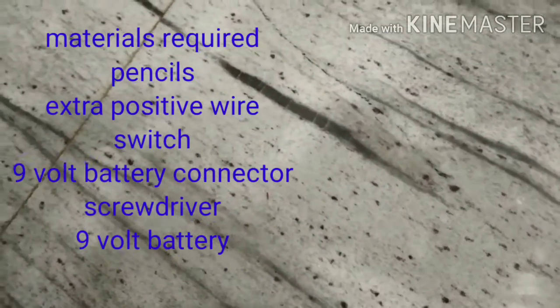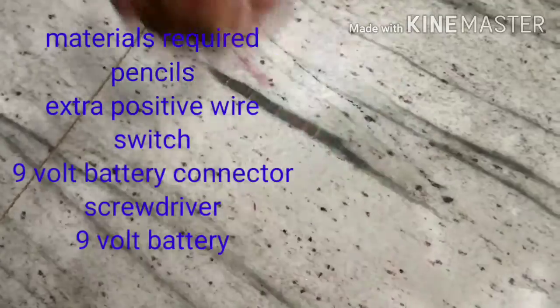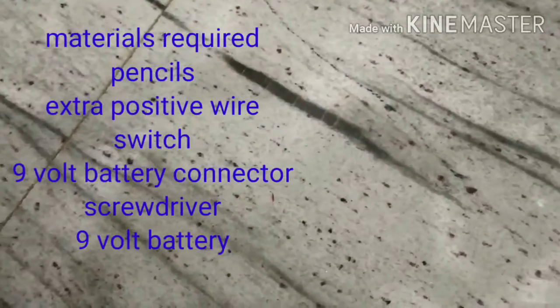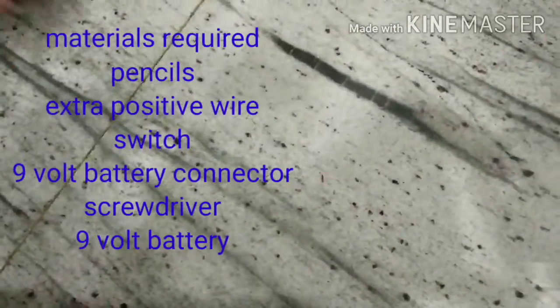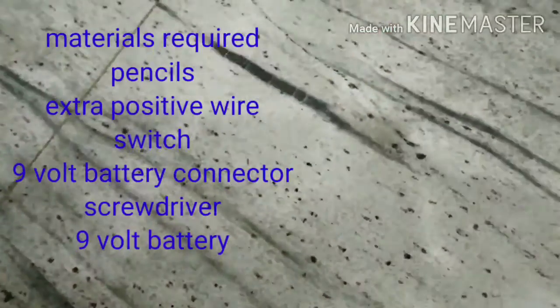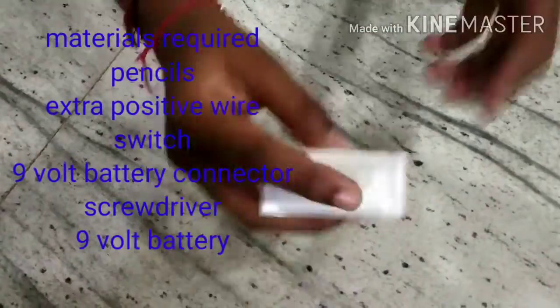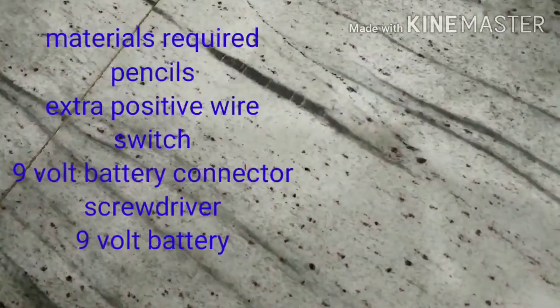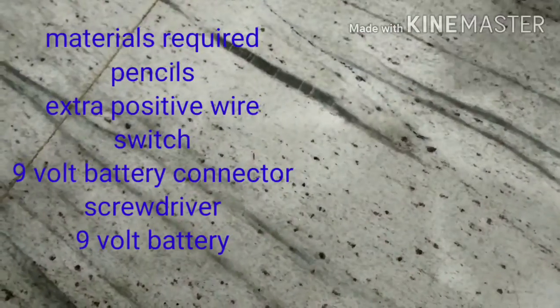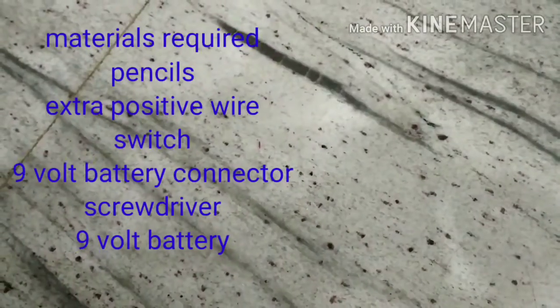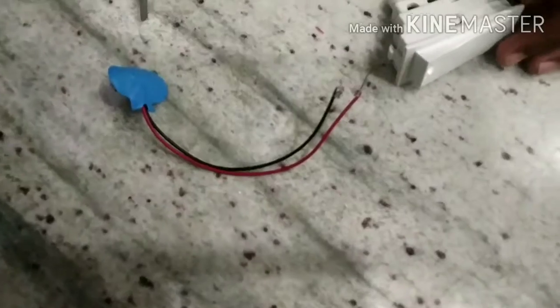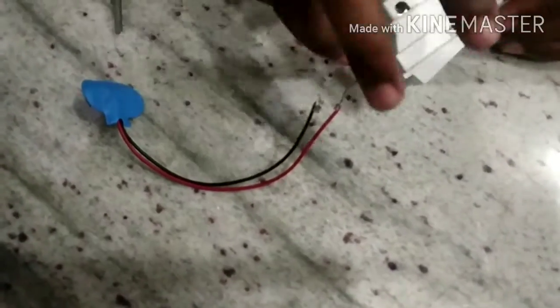First let's see the materials required: a bulb, 9 volt battery, two pencils sharpened both sides, one switch, 9 volt battery connector, extra positive wire, and a screwdriver. Now let's see the procedure. If you don't have a big switch like this, you can even take a small switch.